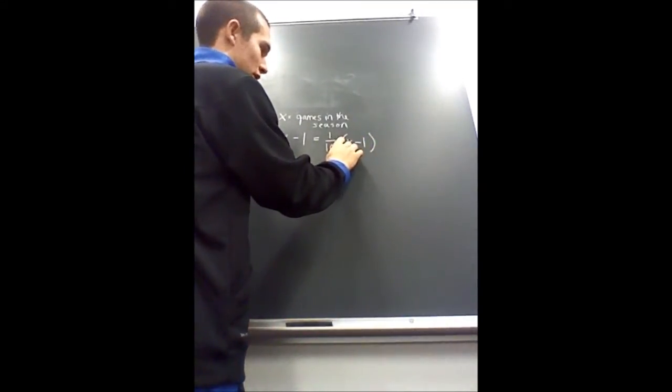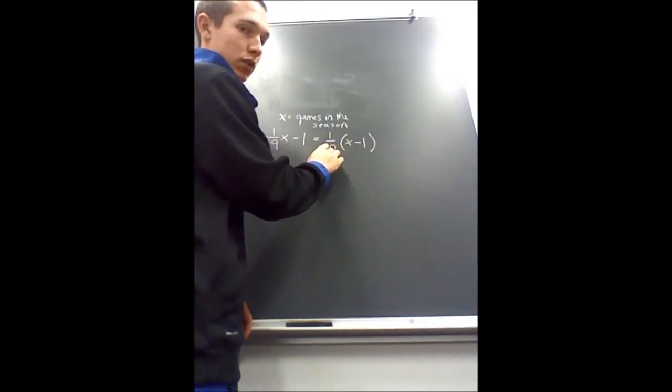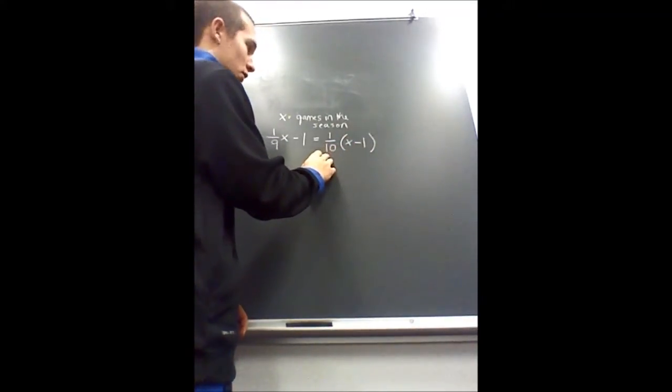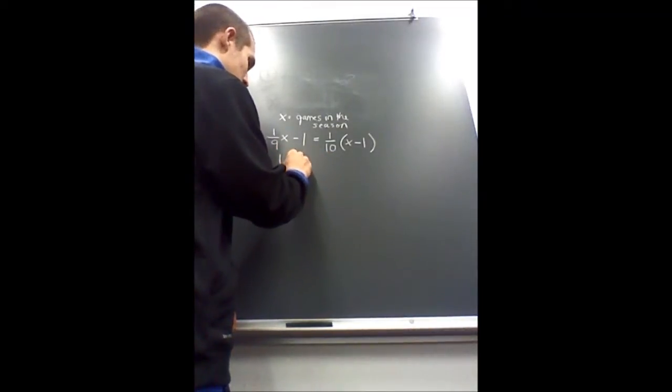And when X equals the games in a season minus one, it says with one game remaining they won one-tenth of their games. So then you just solve for X.